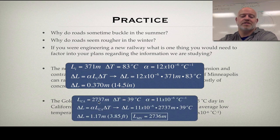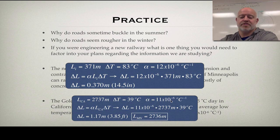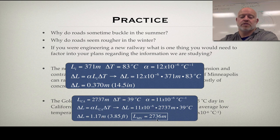For the Golden Gate Bridge, the original length was 2737 meters in California at 25°C. The temperature difference going to Minnesota's average January low of negative 14°C gives us a change of 39°C. Using the expansion coefficient for steel and plugging in our numbers, the change in length is 1.17 meters. So the new length would be about 2736 meters — we lose a whole meter of length on that bridge. In effect, that bridge would be almost four feet shorter if we brought it from California to Minnesota.